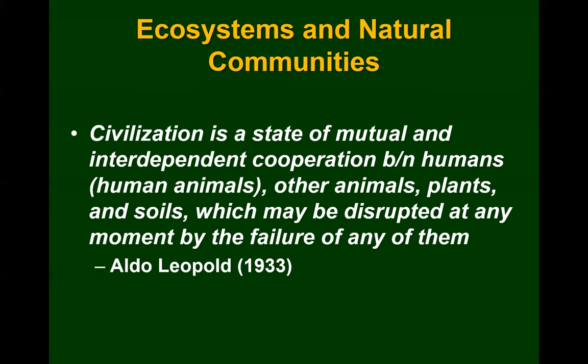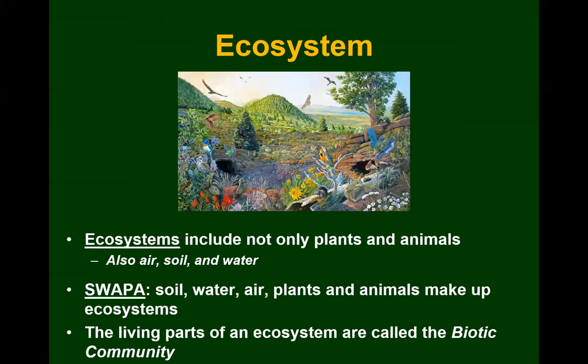Along those lines, let's define ecosystems. Ecosystems don't just include plants and animals — they also include air, soil, and water. When we talk about ecosystems, we talk about something called SWAPPA — we like our acronyms in natural resource management. SWAPPA stands for soil, water, air, plants, and animals — that's what makes up an ecosystem. Commit that to memory.